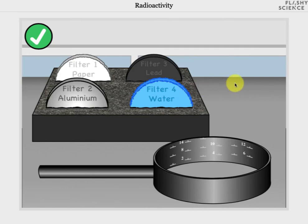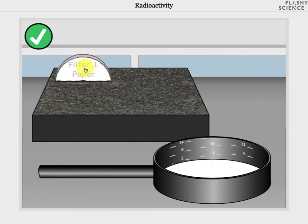Each of these absorbs alpha, beta and gamma radiation differently. To add these simply click on the material of choice. Let's start with paper. You'll see that the other materials disappear and we have one millimeter of the chosen material in the holder.